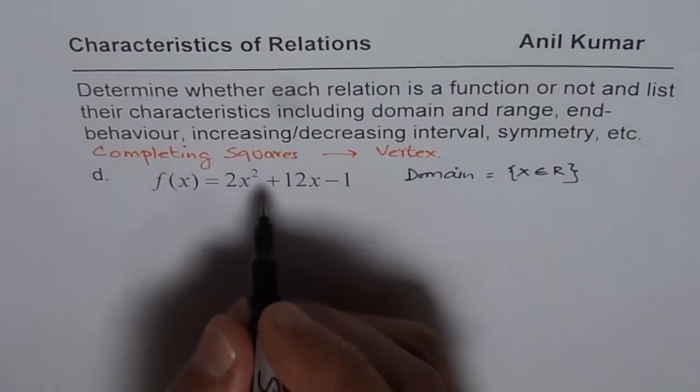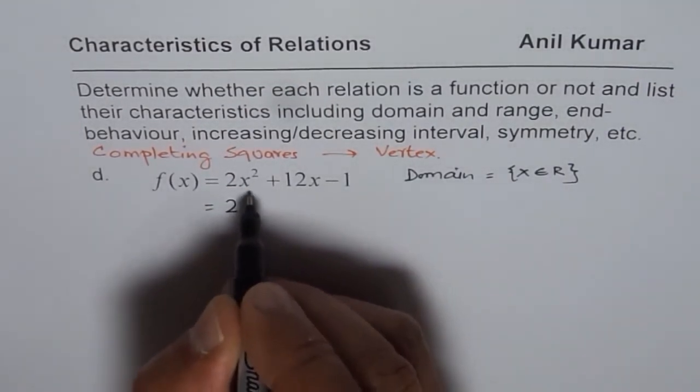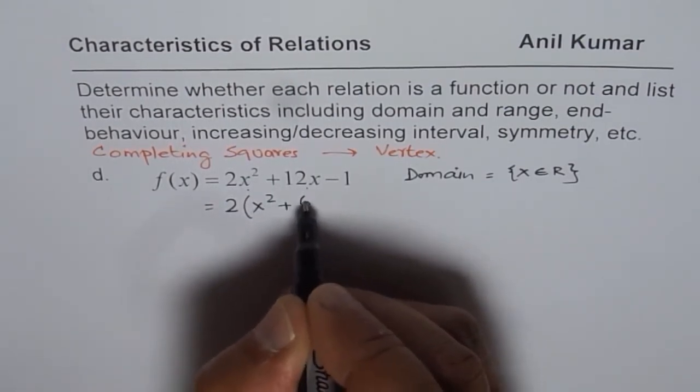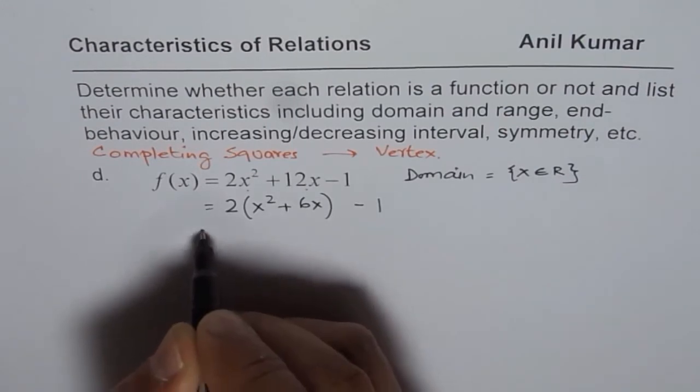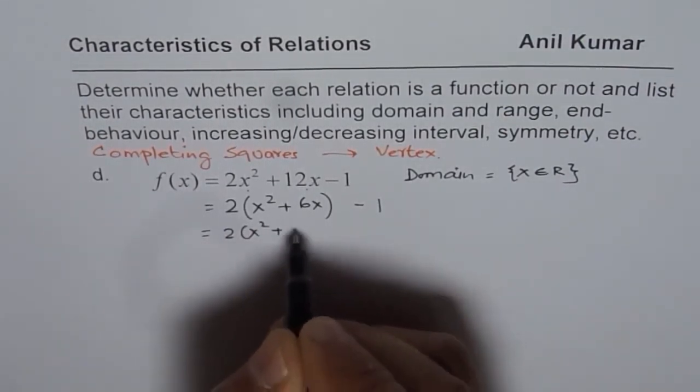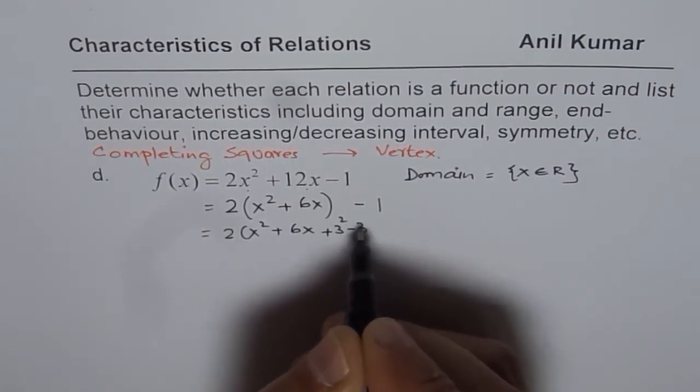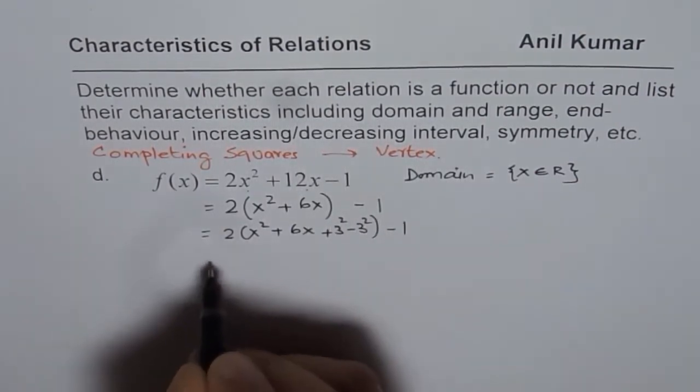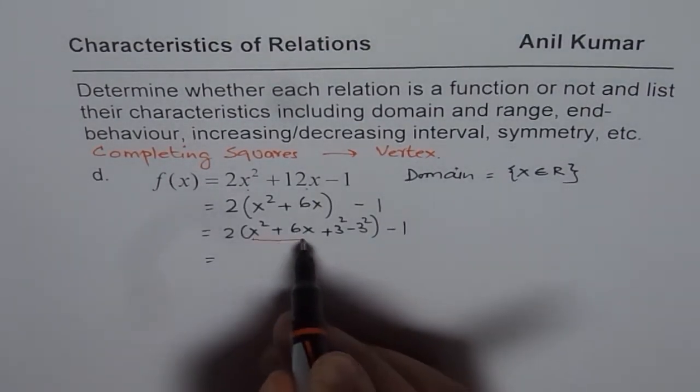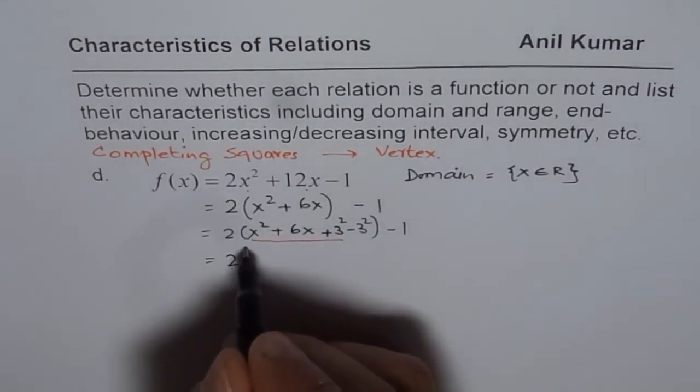This will be a good review for you. Now, we will take 2 as a common factor from these two terms. So we get x² + 6x. Keep this one away. Now, we will do half of 6. Half of 6, you know, is 3. So we will add and subtract 3². Now, first 3 terms inside the bracket are perfect squares.